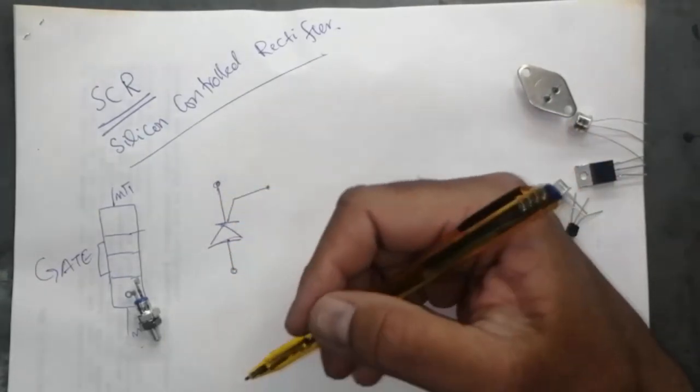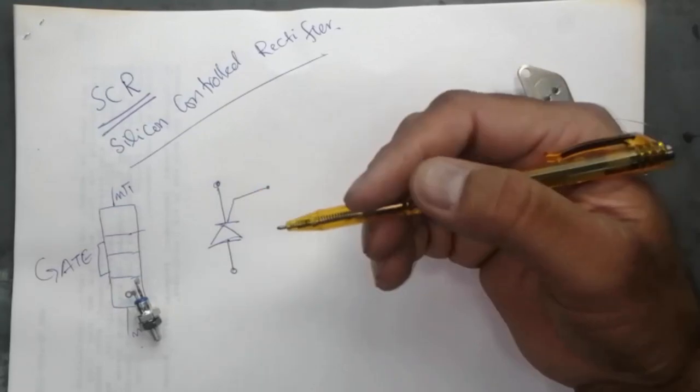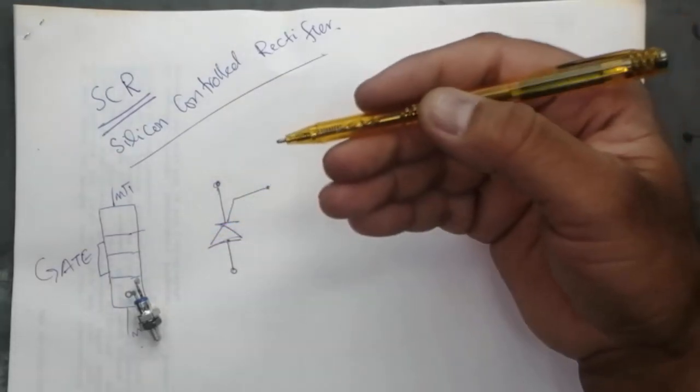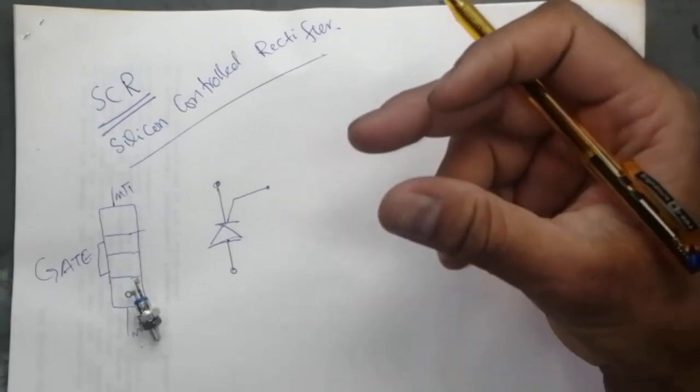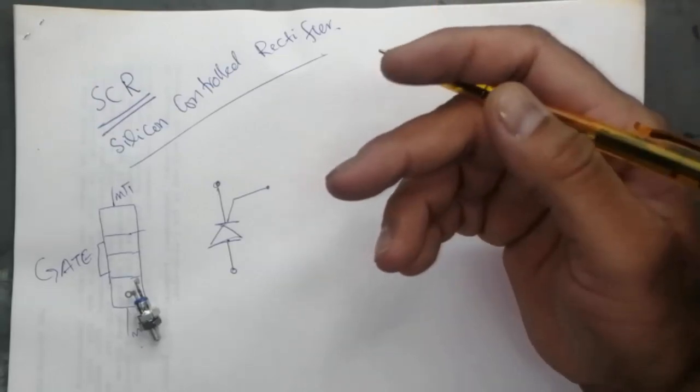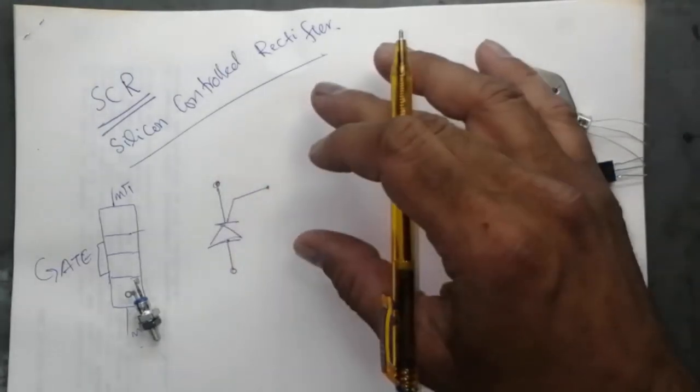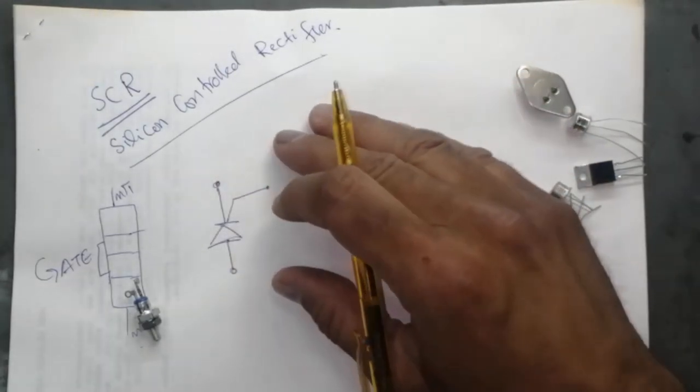It becomes as a relay, but unlike a relay when we remove the command or excitation voltage from the relay, the relay turns off. But SCR, no.